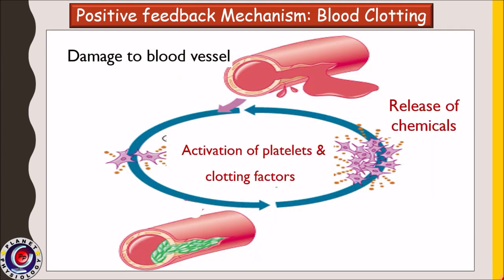Another example is blood clotting. Whenever there is an injury to a blood vessel, it releases certain chemicals and activates platelets as well as clotting factors. These activated clotting factors further activate new clotting factors, and this process is repeated until the injured site is completely sealed off.